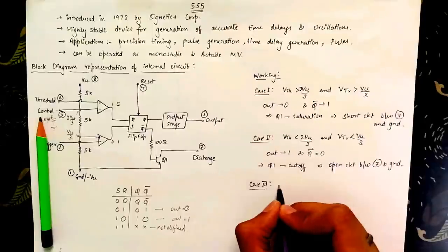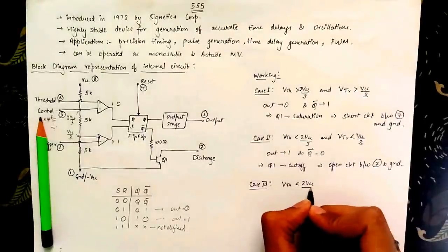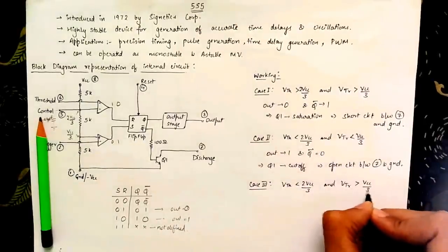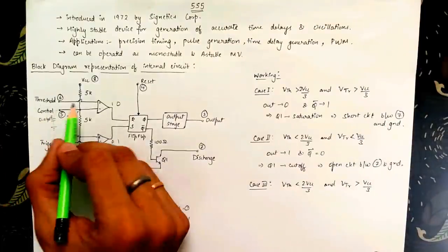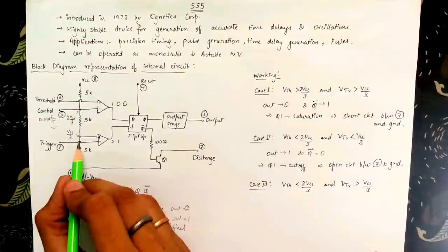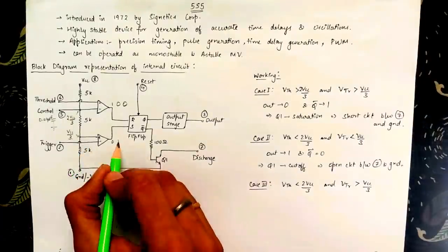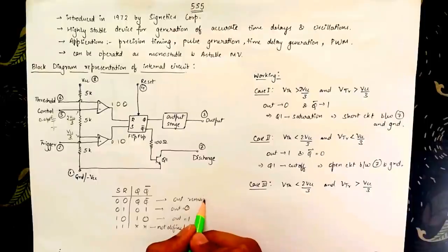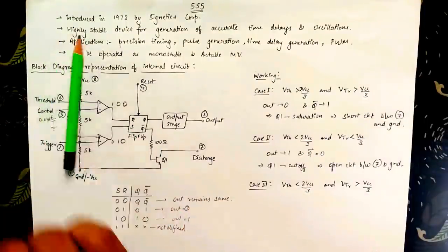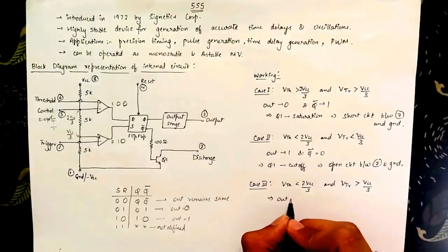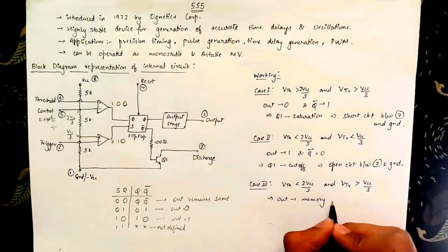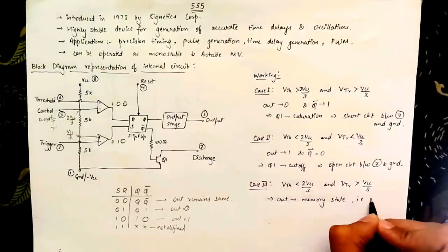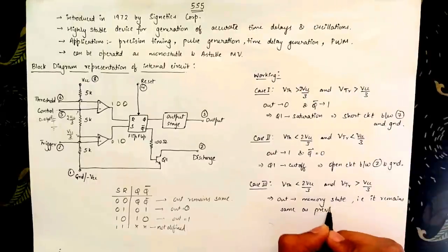For the final case let us consider the threshold voltage to be less than 2Vcc by 3 and the trigger voltage to be greater than Vcc by 3. For these two values the output of comparator 1 is logic 0 and the output of comparator 2 is also logic 0. When the input to the RS flip-flop are both logic 0 the output remains same. Therefore the output of 555 IC is in memory state, a state in which the output remains same as the previous state.